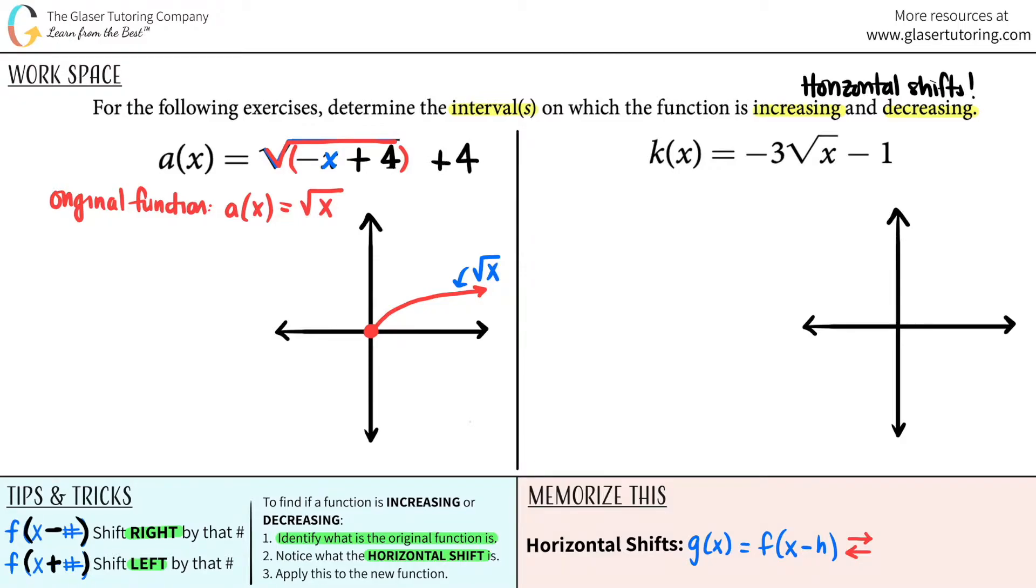Now, if the plus four was out here and there was no square root, it would not be part of the horizontal shifts. That would be a vertical shift. But here we are shifting. It's a plus, right? So down here, pluses means that you shift to the left. So we are shifting four units to the left.